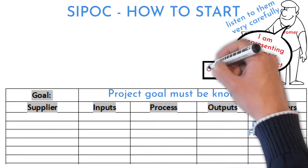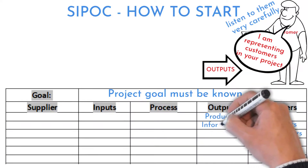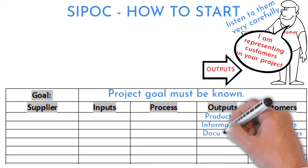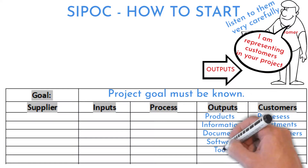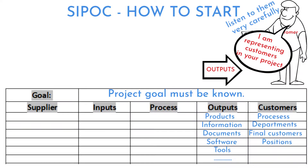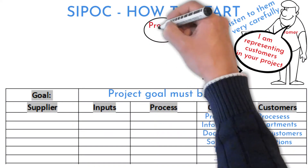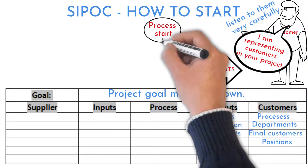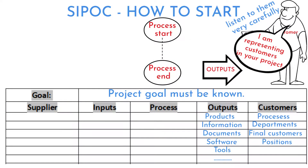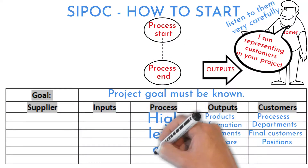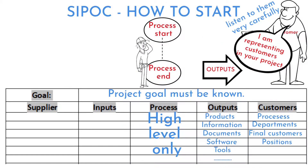Continue with expected outputs. Customers should know what products, information, documents, software, or tools they are expecting from the process — list each of them. Next, write down the steps in the process from start to end. Do not go into too much detail for now. A member of the SIPOC process should be on your team too.